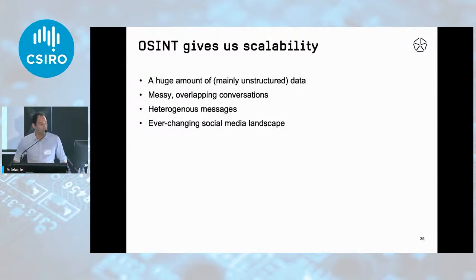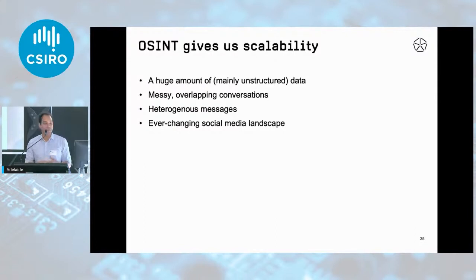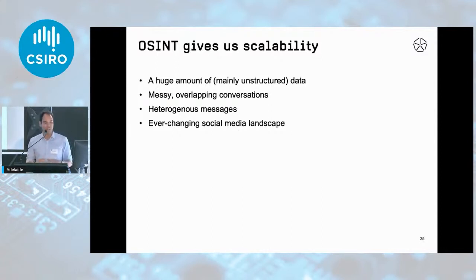OSINT also gives us scalability. There's a huge amount of mainly unstructured data that we need to sift through — it's messy, there are overlapping conversations sometimes going cross-platform, heterogeneous messages, and an ever-changing social media landscape. On the point of heterogeneous messages, a valid message can be anything from a structured essay or a manifesto to a video, an image, a short piece of text, a simple reply, a meme, an emoji, a thumbs up, a like — anything in between. OSINT gives us smart, automated solutions which can really help analysts follow topics, follow conversations, and interrogate networks.